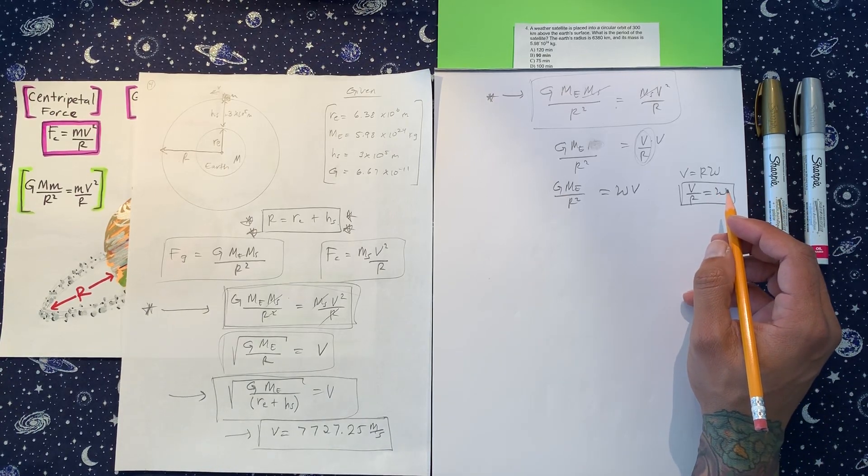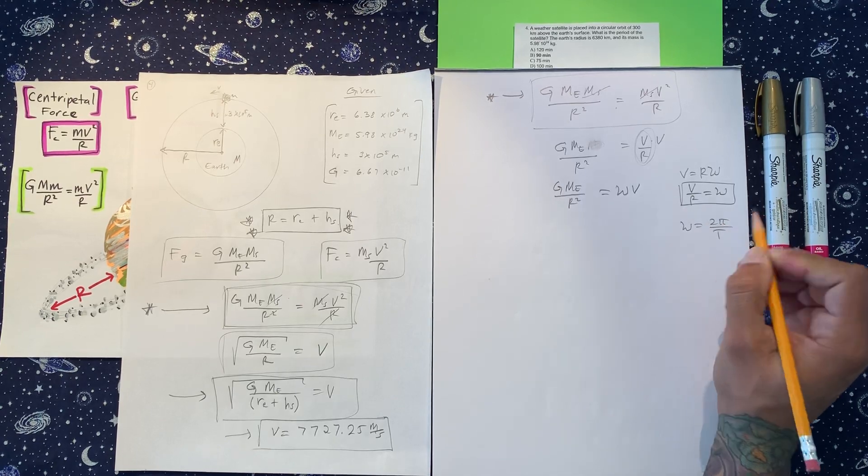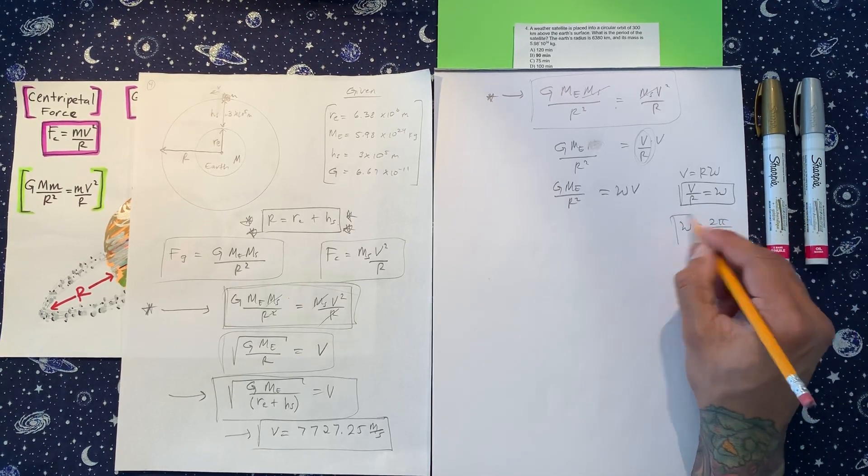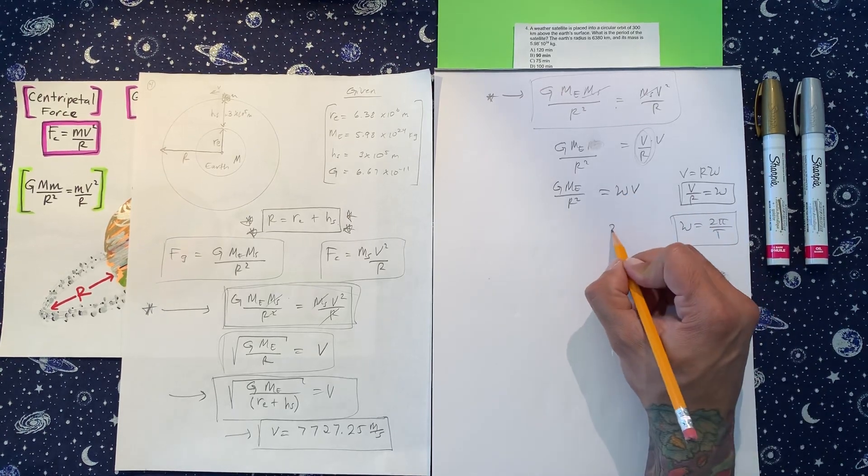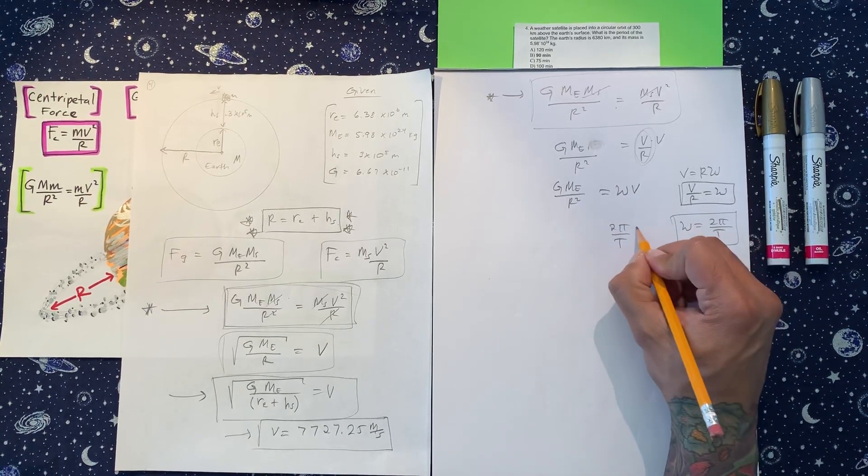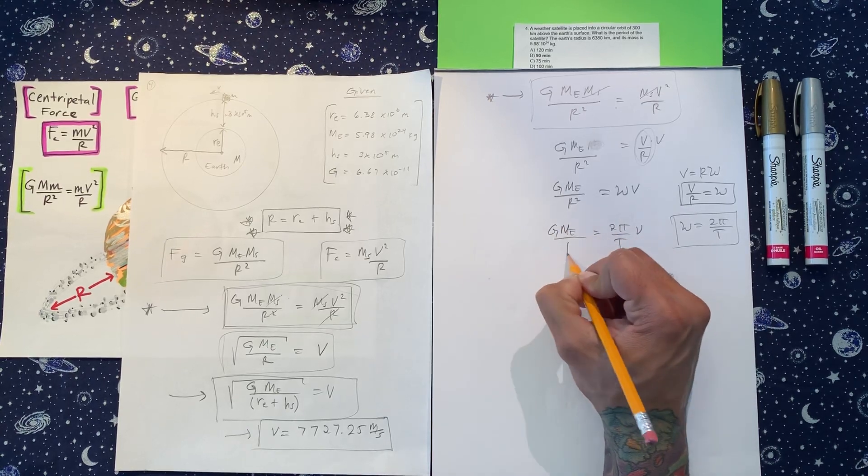So one more formula that you need to know. And that is that omega is equal to two pi over the period. It's perfect because this is what we're looking for here. So we're going to replace omega with two pi over T. We still have velocity. And everything else stays the same.